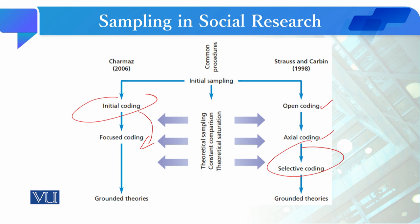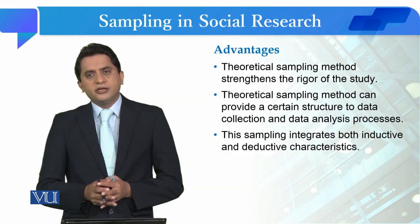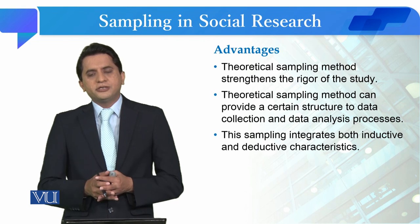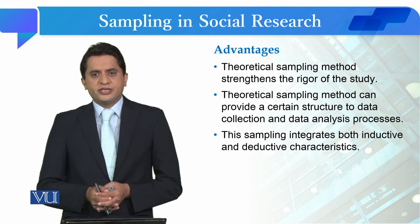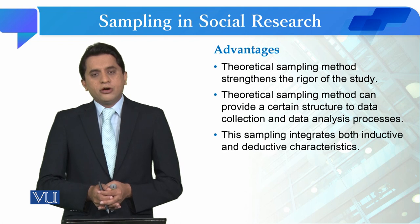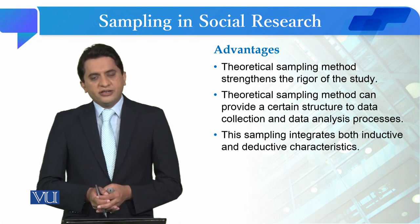Theoretical sampling के अगर हम advantages की बात करें तो यह method इसलिए बहुत ज़्यादा useful है कि इससे rigor of the study बढ़ती है। Theoretical sampling can provide a certain structure to data collection and data analysis process। यह non-random की type है जिसमें हम back and forth data collect करते हैं — यानि data collect करने के बाद उसका analysis करने के बाद फिर जाके respondent से भी data collect कर सकते हैं। तो इस वजह से इसकी बड़ी unique nature है।